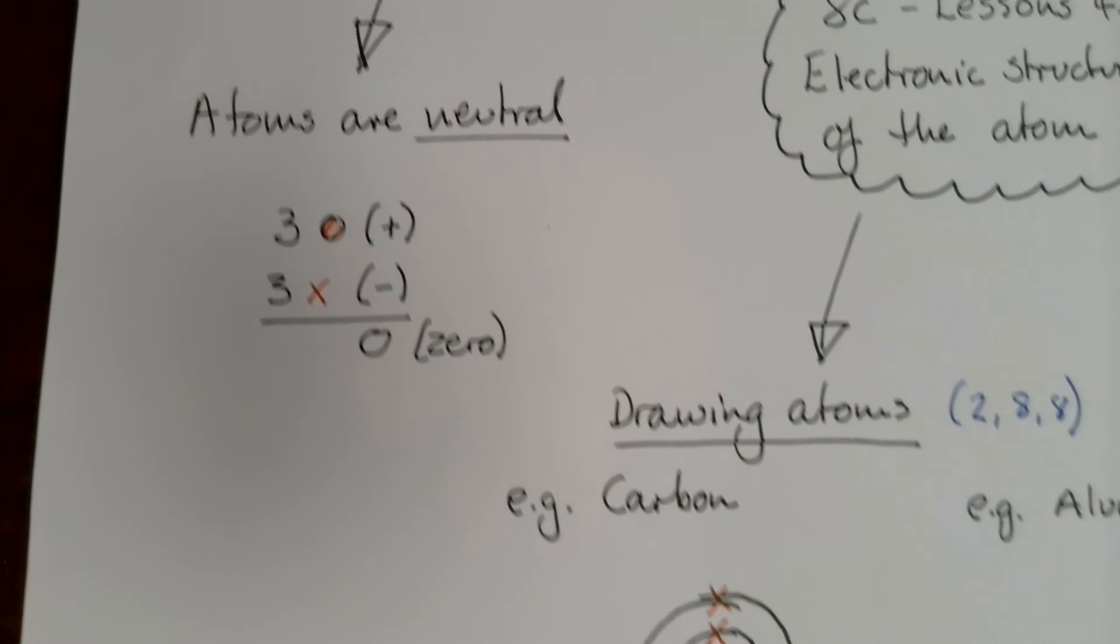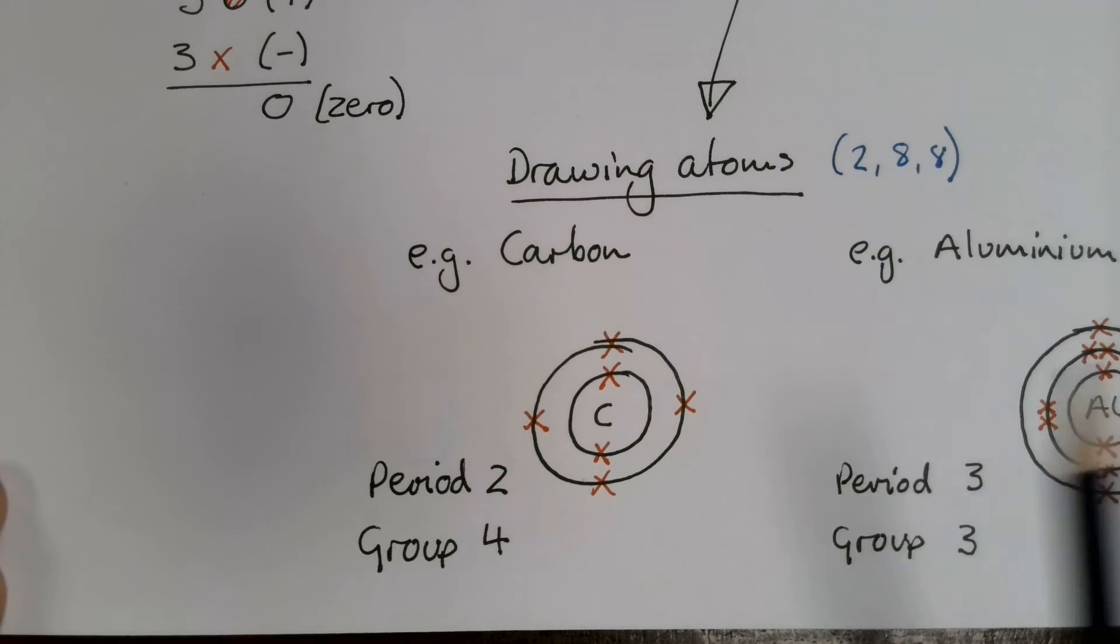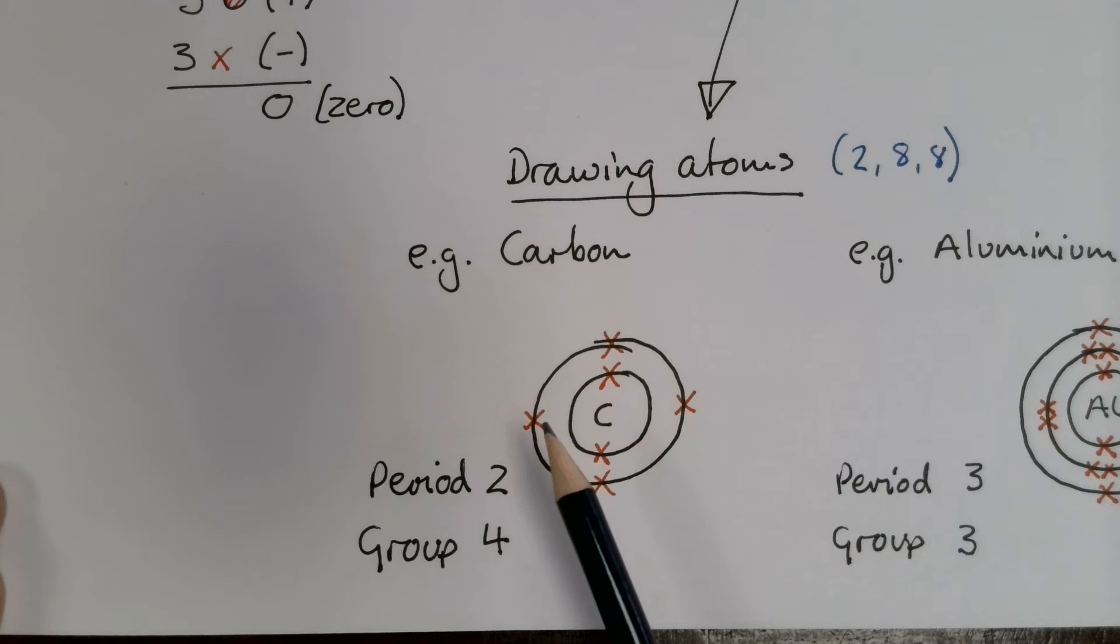So how do you draw different atoms from different elements? Well, I'm going to go through two examples with you. The first one is carbon. The first thing I can do is look at carbon in the periodic table and see that it's in period two. So that means I need to draw two shells or energy levels. I also know it's in group four.